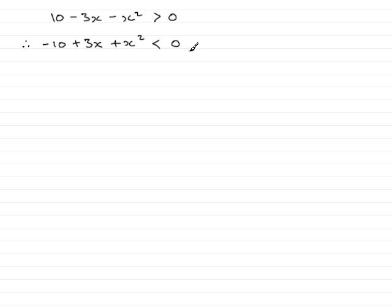Now this is in the wrong order for factorizing. It's much better to lead off with the x² term. So I'm going to change it round and we have therefore x² + 3x - 10 < 0.